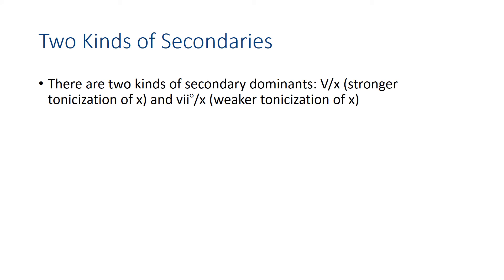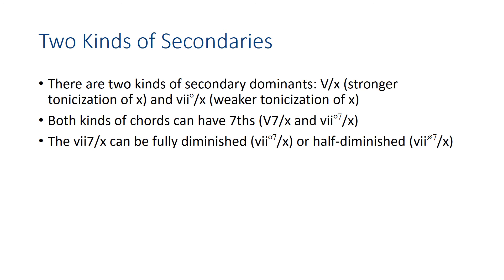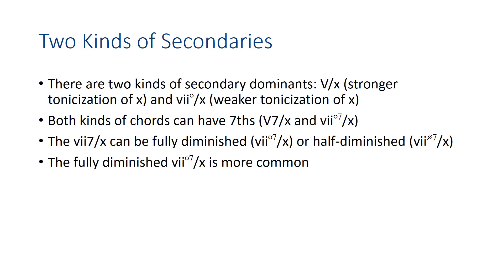I'll end with a summary of the new material. There are now two kinds of secondary dominants: the five of x, which is stronger, and the seven diminished of x, which is weaker. Either one can have a seventh as well — a five-seven of x, a seven fully diminished seventh of x, or also a seven half diminished seventh of x. Of those, it's more common for composers to use the fully diminished seventh chord, even if tonicizing a major key — they tend to prefer the fully diminished sound.